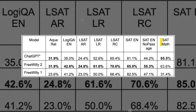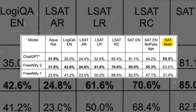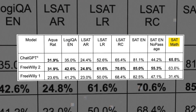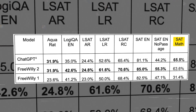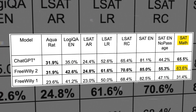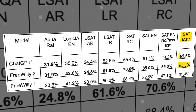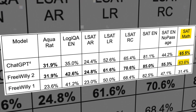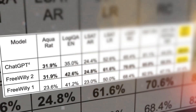Finally, on the SAT math task, the model has to solve math problems like the ones on the SAT test. Free Willy 2 got 63.6% of them right — that's a bit less than ChatGPT's 65.5%, but it's still really good for a model that's all about language.